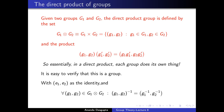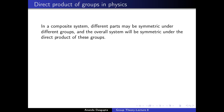Before we look further into the properties of the direct product, let me motivate the reason for being interested in them from physics. If you have a composite system made out of different parts, it is possible that each individual part will be symmetric under certain different symmetry groups. The whole system will then be symmetric under the direct product of these groups, because each piece of the direct product will act on each individual sub-system, leaving that part the same — and if both parts stay the same, the overall system stays the same. This is how you often encounter direct product groups in the quest for symmetries of physical systems.